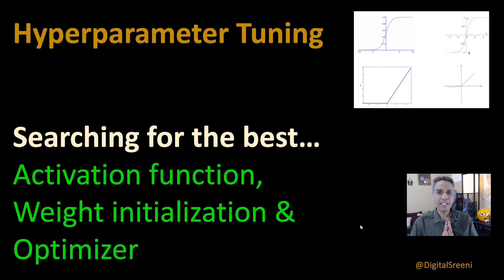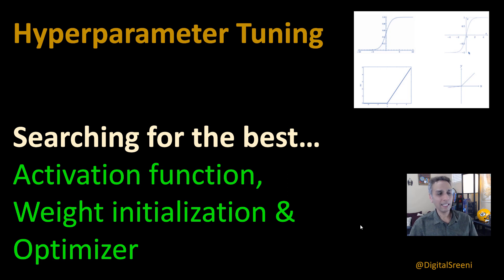Hey guys, this is Srini and in this tutorial let's continue our discussion about hyperparameter tuning. In the last video we looked at how to perform a grid search for the best parameters for learning rate and momentum. In this video let's look at activation functions, weight initialization, and optimizers. What are the best ones?